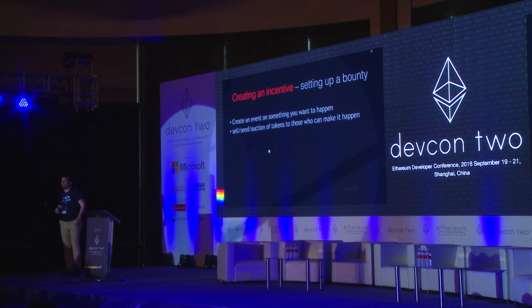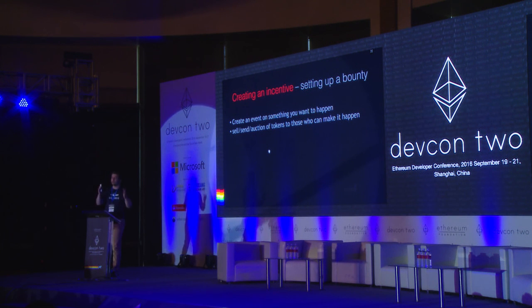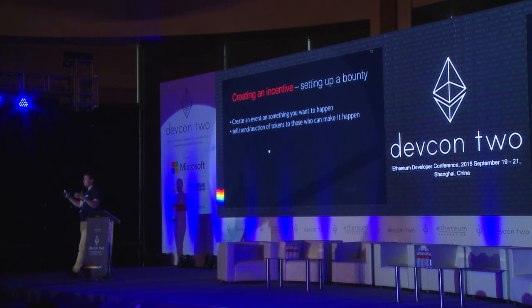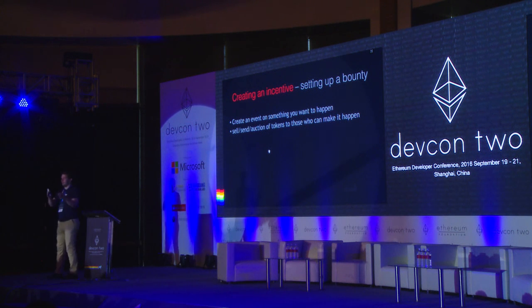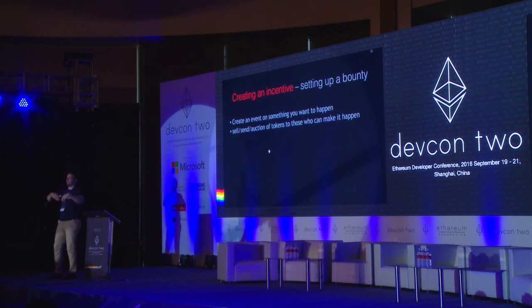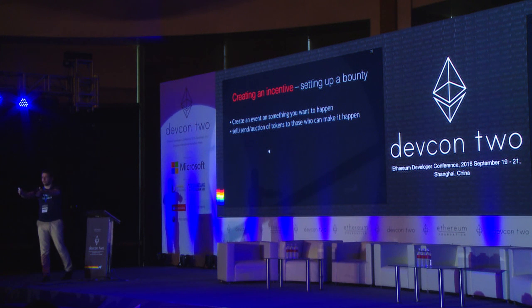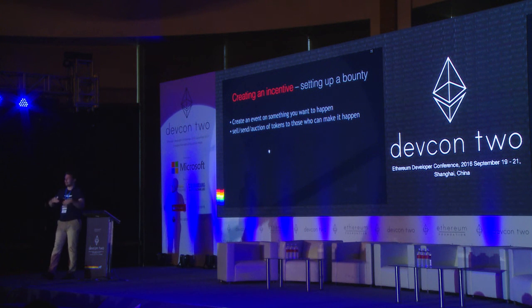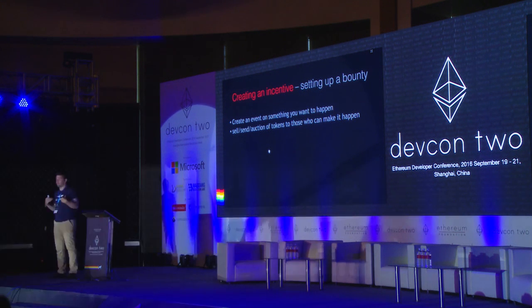Another application is creating an incentive. You create a market on something you want to happen — two outcomes: it will happen or it will not happen. Then you either give tokens of the 'it will happen' outcome to someone who can make it happen, or you sell or auction those tokens to them. They now hold tokens they can make valuable, and they know if they make it happen, those tokens will be worth one unit of collateral.